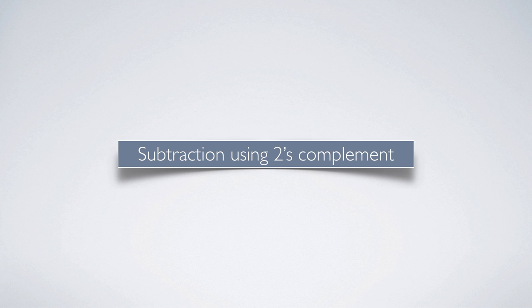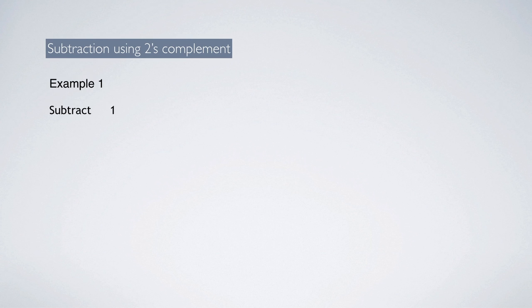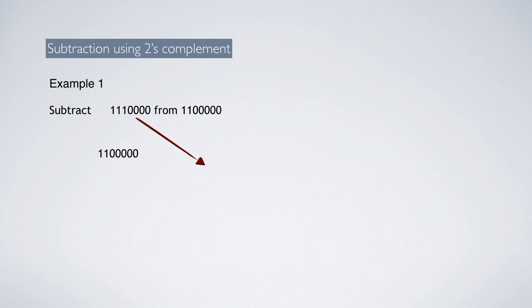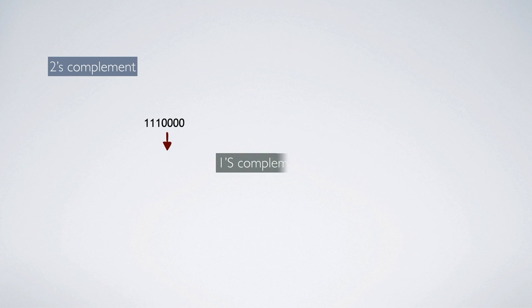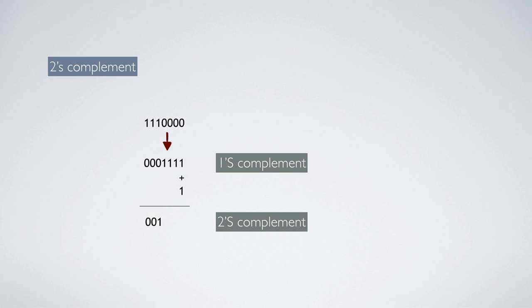Now we are going to see subtraction using 2's complement method. Let us take the same example: subtract 1110000 from 11000000. The first number 11000000 is kept as it is, and for the second number 1110000, 2's complement should be taken. The procedure is: first take 1's complement and then add 1 to the result. The 1's complement of 1110000 is 0001111, and after adding 1, we get 0010000.